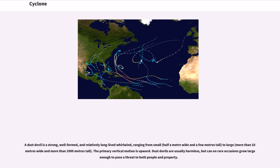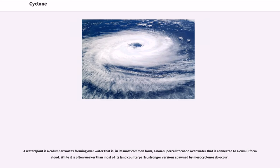A dust devil is a strong, well-formed, and relatively long-lived whirlwind, ranging from small — half a meter wide and a few meters tall — to large — more than 10 meters wide and more than 1,000 meters tall. The primary vertical motion is upward. Dust devils are usually harmless, but can on rare occasions grow large enough to pose a threat to both people and property. A waterspout is a columnar vortex forming over water that is, in its most common form, a non-supercell tornado over water connected to a cumuliform cloud. While it is often weaker than most of its land counterparts, stronger versions spawned by mesocyclones do occur.